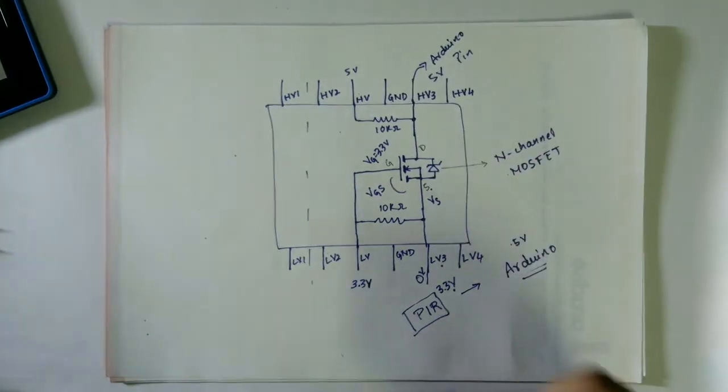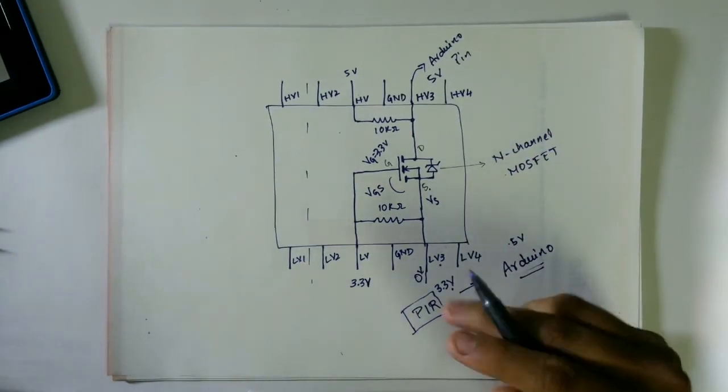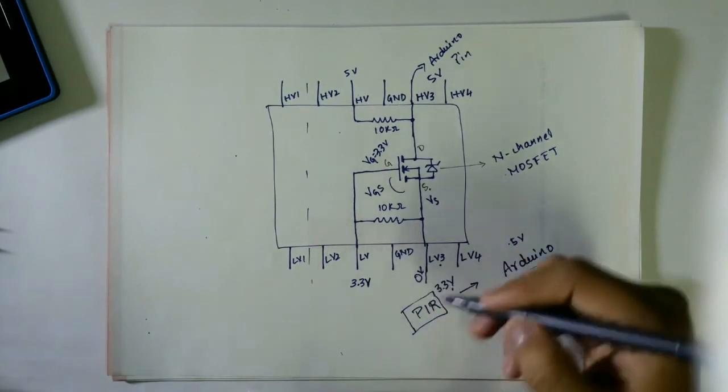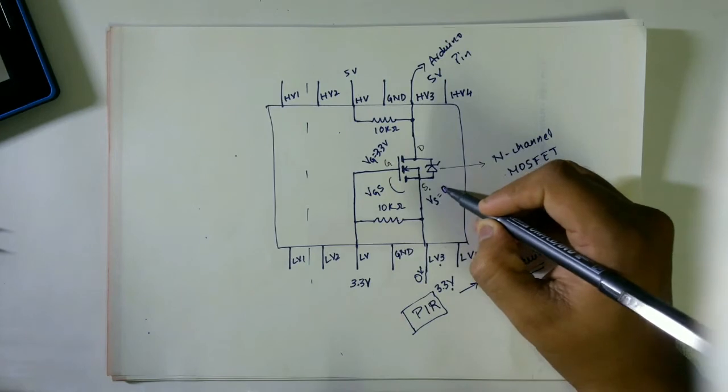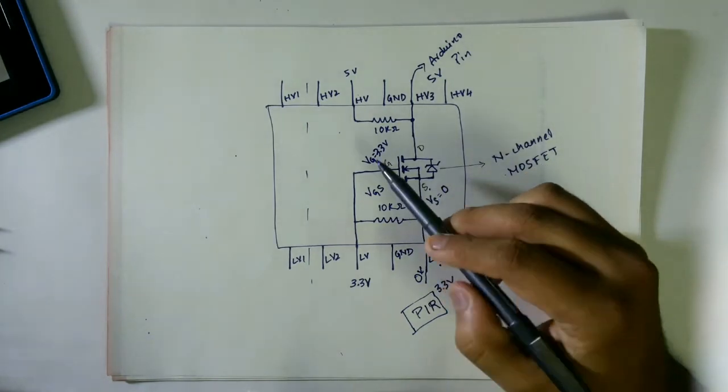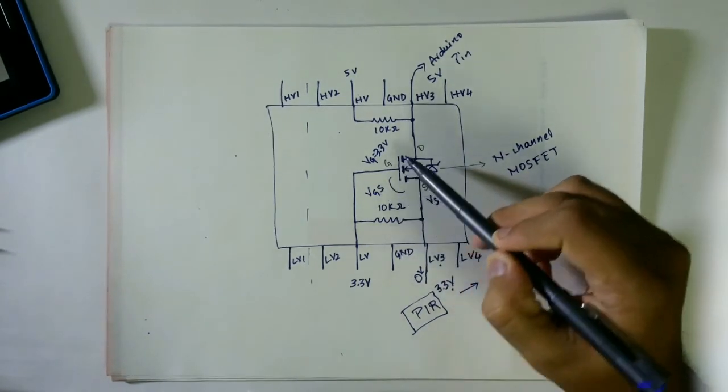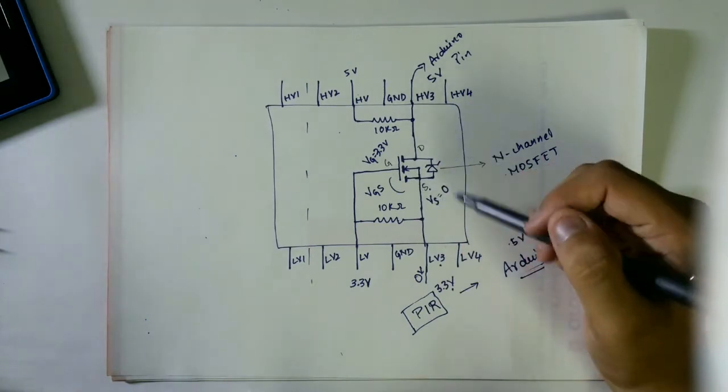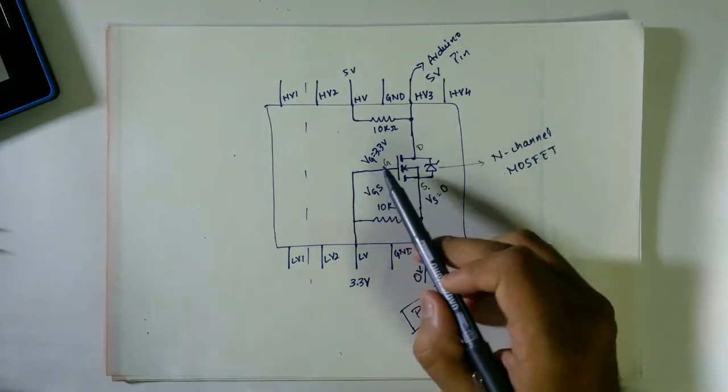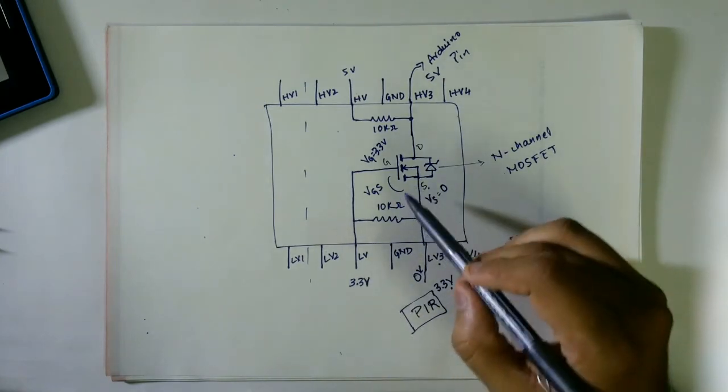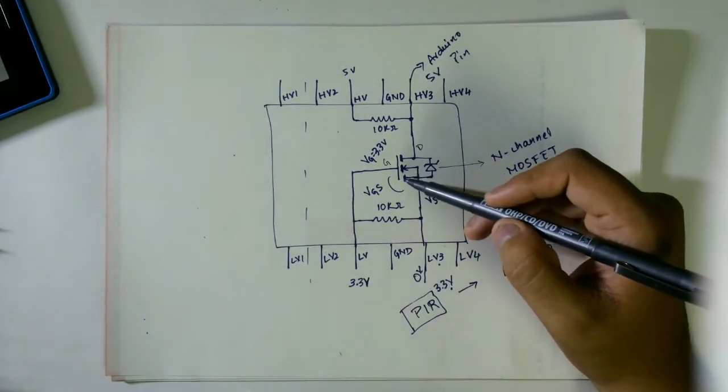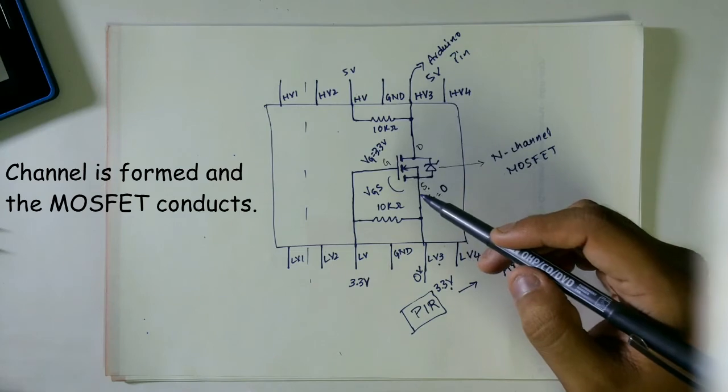So what happens when the PIR sensor is not giving any output? When it is not giving any output, that is zero volts, Vs, that is the source voltage, will be zero and therefore the Vgs, potential difference between gate and source, will be high. It will be 3.3 voltages because we have kept the gate voltage constant to 3.3 volts. So now there will be a channel formation and the MOSFET will be conducting.